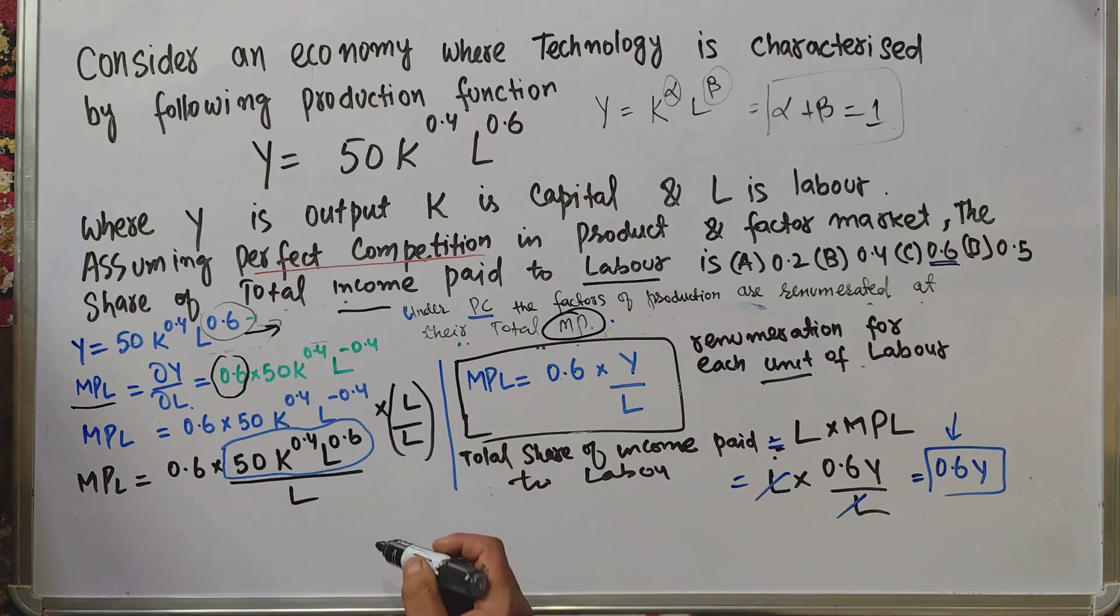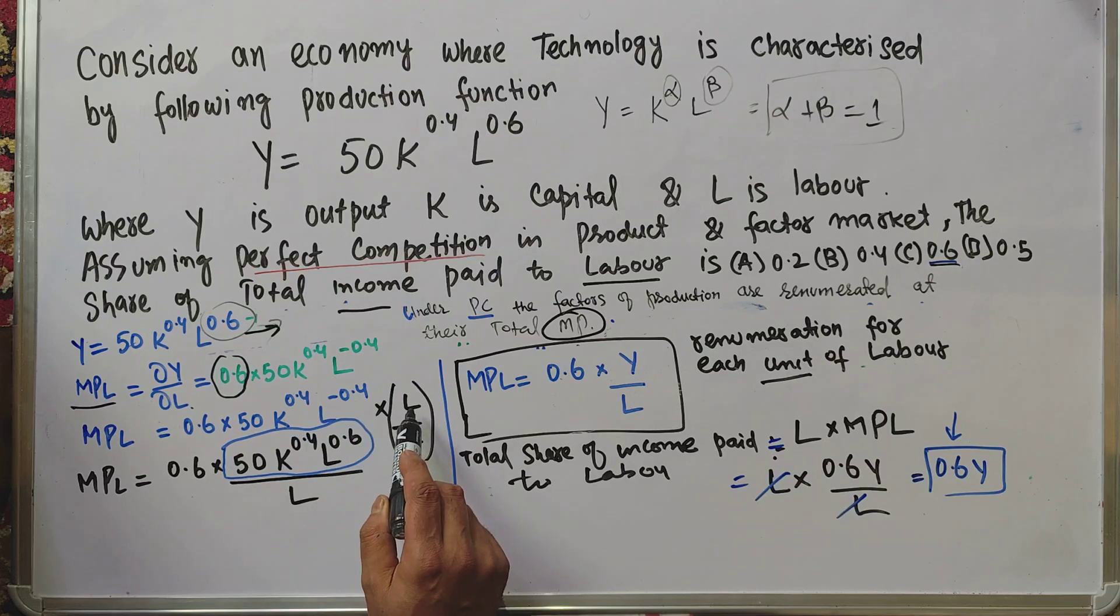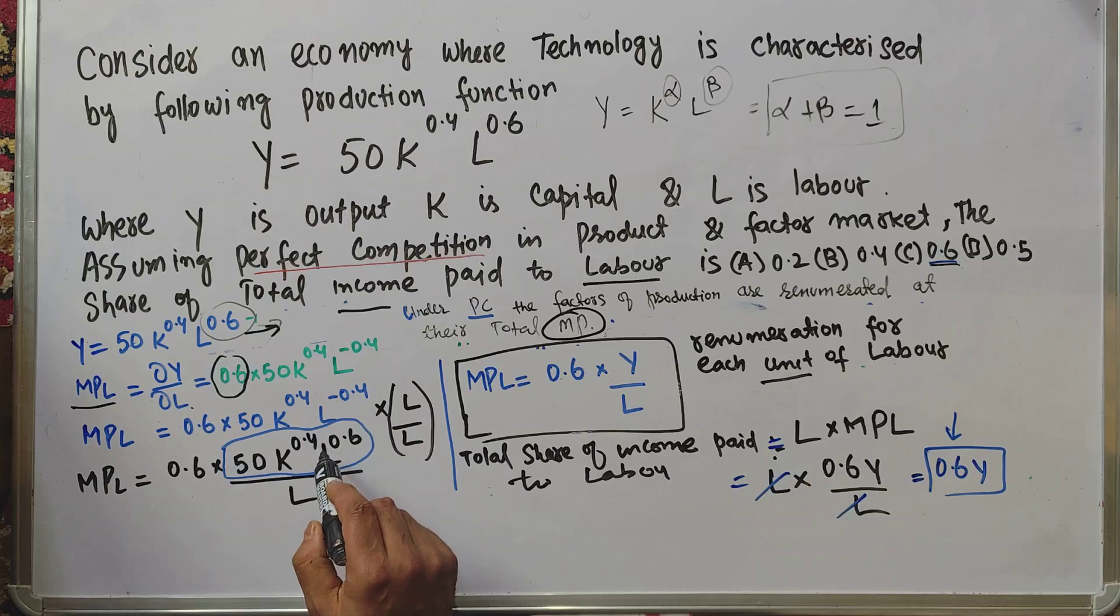We have 0.6 × 50K^0.4, and when L and L are multiplied together with the same base, we add the exponents. The sum of the exponents is 0.6, because -0.4 + 1 = 0.6.